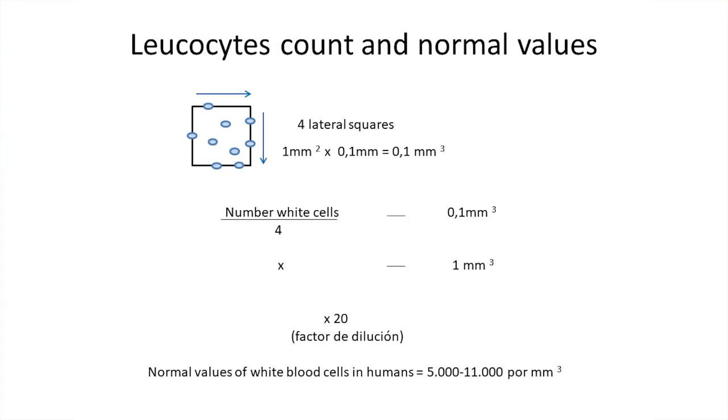Each lateral square has a surface area of 1 square millimeter, so its volume will be 0.1 cubic millimeters. Thus, we can apply the same formula to calculate the number of leukocytes per cubic millimeter in the diluted sample, which multiplied by its dilution factor will give us the number of leukocytes in the original sample. Normal values of leukocytes in humans are between 5,000 and 11,000 leukocytes per cubic millimeter of blood.